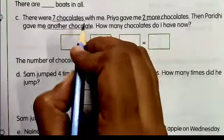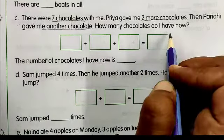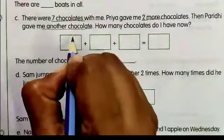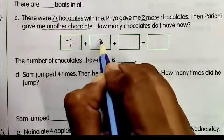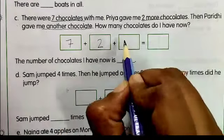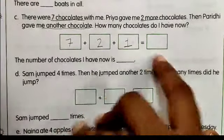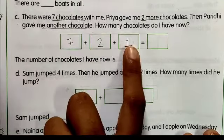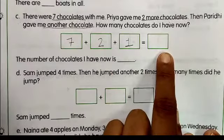Pehle mere paas kitni chocolates thi? And last mein kya puchha hai — how many chocolates do I have now? Pehle mere paas 7 chocolates thi, then Priya ne mujhe 2 more chocolates di, and then Paridi ne mujhe another 1 chocolate di. Toh ab mere paas kitni hoi? 7 thi, 2 Priya ne di, aur 1 Paridi ne di — toh mere paas total inko add karenge toh answer aa jayega.